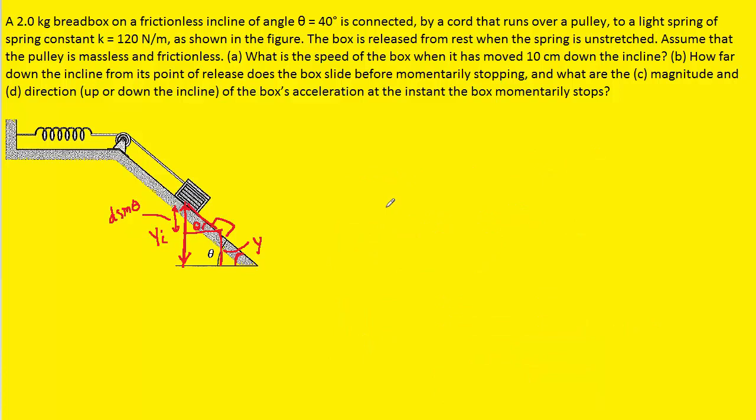Now on to part b, which asks how far down the incline will the box slide before momentarily stopping. That means that the final speed of the box is going to be 0 meters per second. So basically we're going to set up the same energy conservation equation.